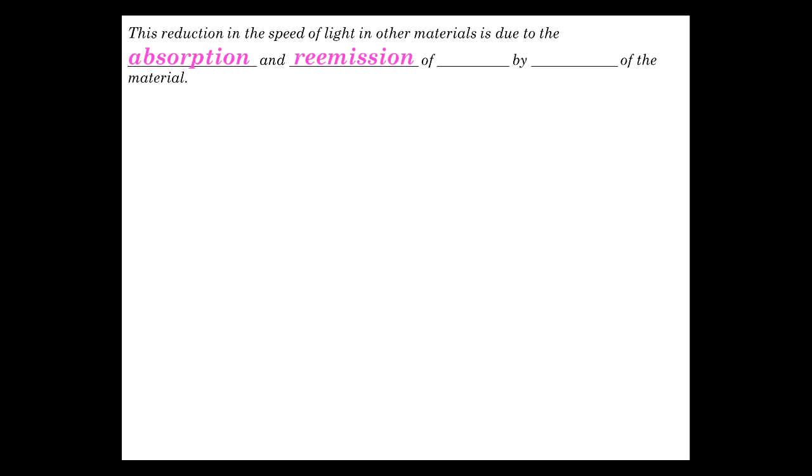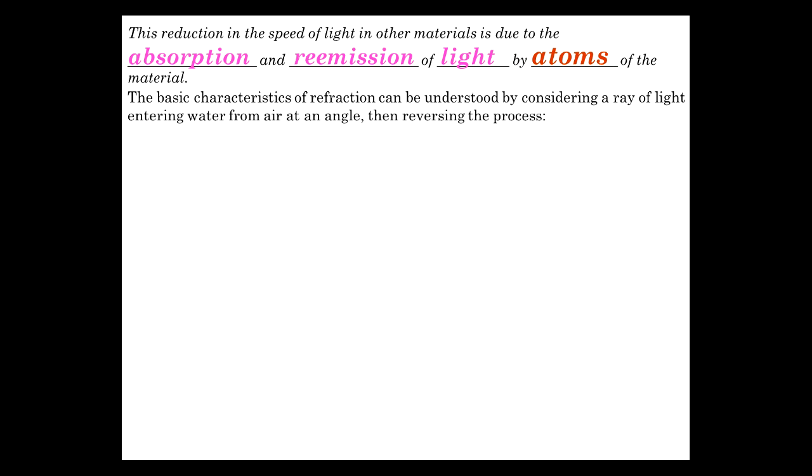In brief, this reduction in the speed of light that is experienced by light passing through a non-vacuum medium, think of it as absorption and remission of the light, the photons, by the atoms of the material. It's called scattering. You can think of it as taking a little bit of time for that process to happen, so it slows down the progress of the motion of the light through the material.